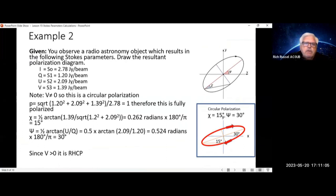Example 2. We observe another radio astronomy object, and we get the following Stokes parameters. Note that V is not equal to 0, so this is circular polarized. P, you work out that value, equals 1. Therefore, it is fully polarized.